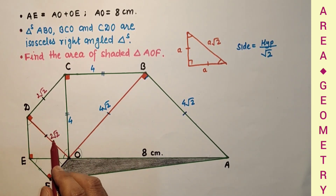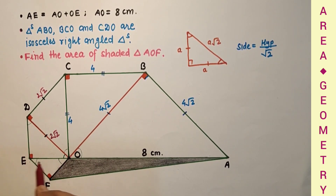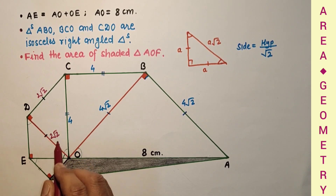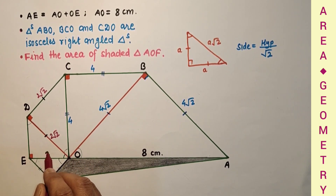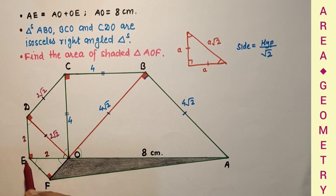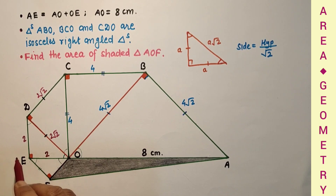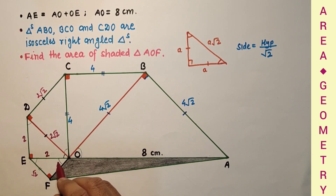Since this side is 2√2, we can again use the isosceles right angle triangle side formula. This side will be hypotenuse divided by √2, so 2√2 divided by √2 equals 2 — this side is 2 and this side is 2. Once again applying the same, 2 divided by √2 gives √2, so this side is √2 and this side is √2.